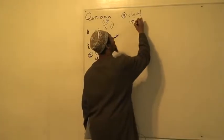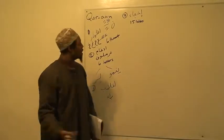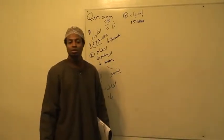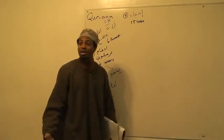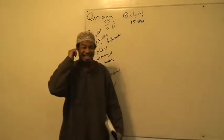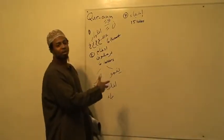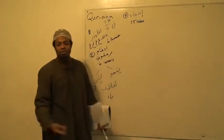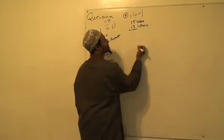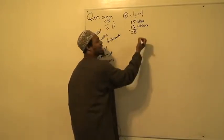So it's fifteen letters for Ikhfa. Fifteen plus thirteen equals twenty-eight letters. Since we know the six letters of the throat, the six letters of Idgham, and the one letter of Iqlaab, we should be able to name the other fifteen letters.